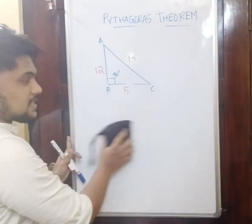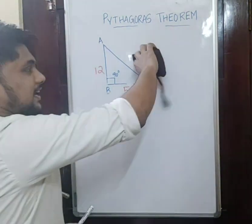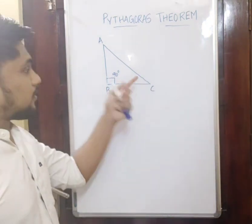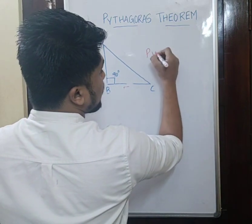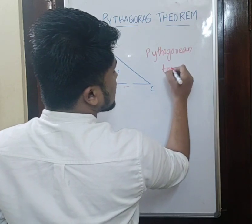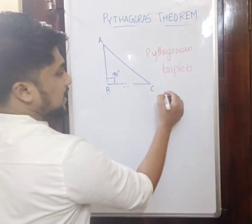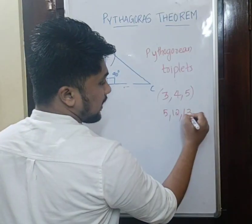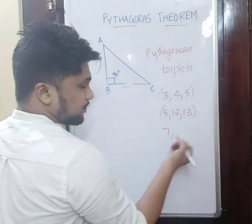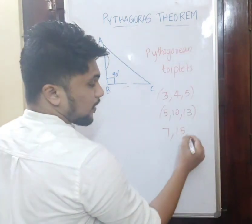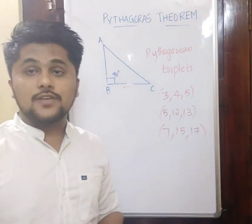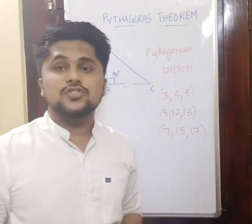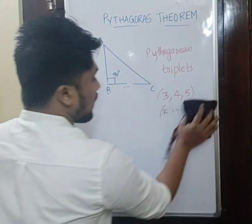We call this type of numbers 'Pythagorean triples'. These are natural numbers — we can't take negative numbers because the length of a side should be positive. So the natural numbers that satisfy this relation are called Pythagorean triples. Examples we've taken: 3, 4, 5 and 5, 12, 13. Another example is 7, 15, 17 — where 7 squared is 49, plus 225 equals 289, which equals 17 squared. These are all positive natural numbers.